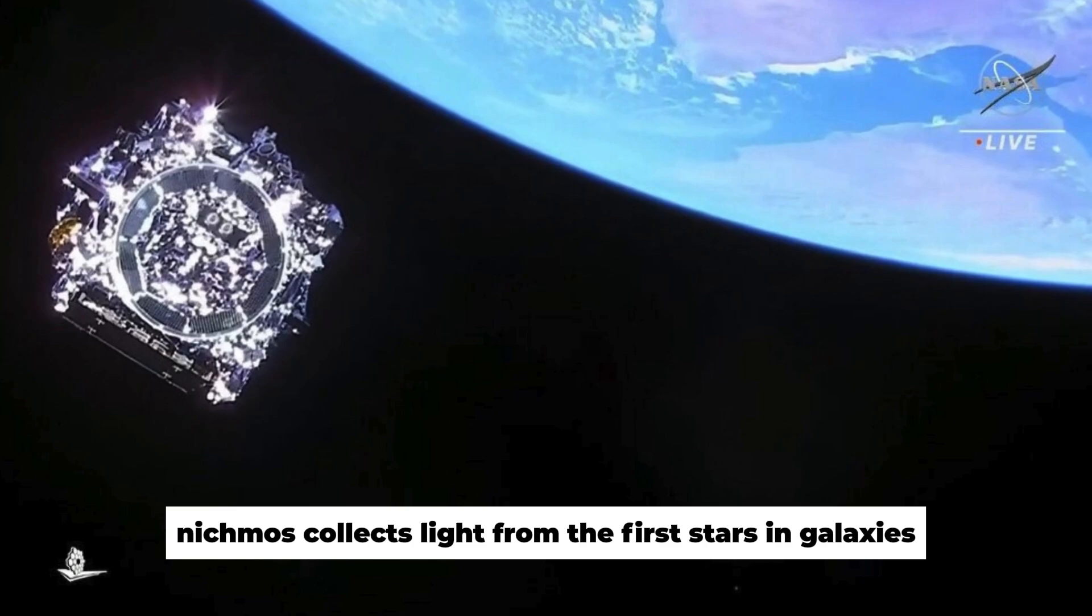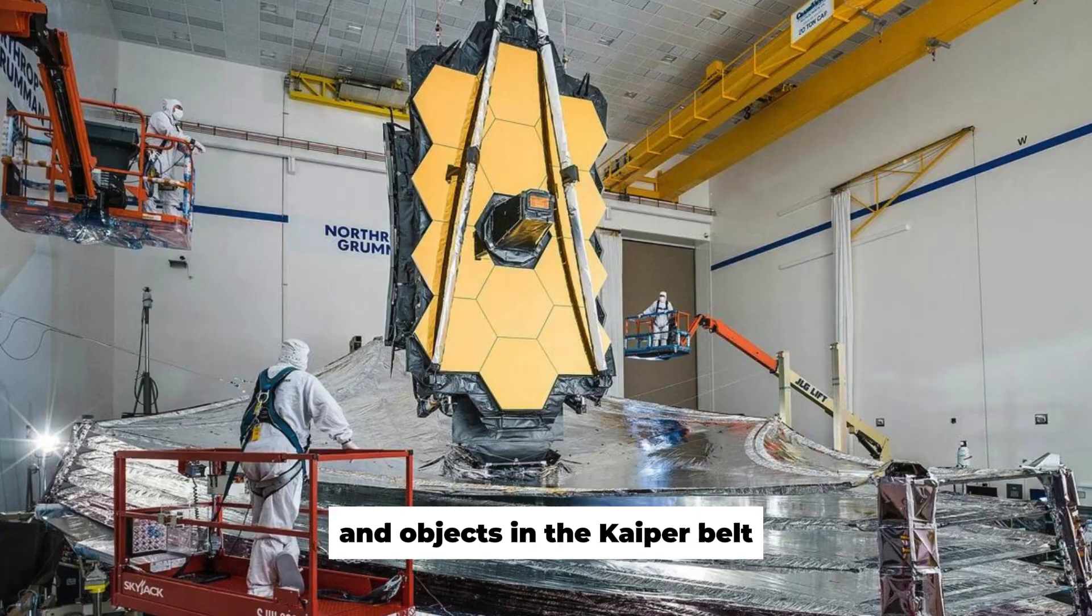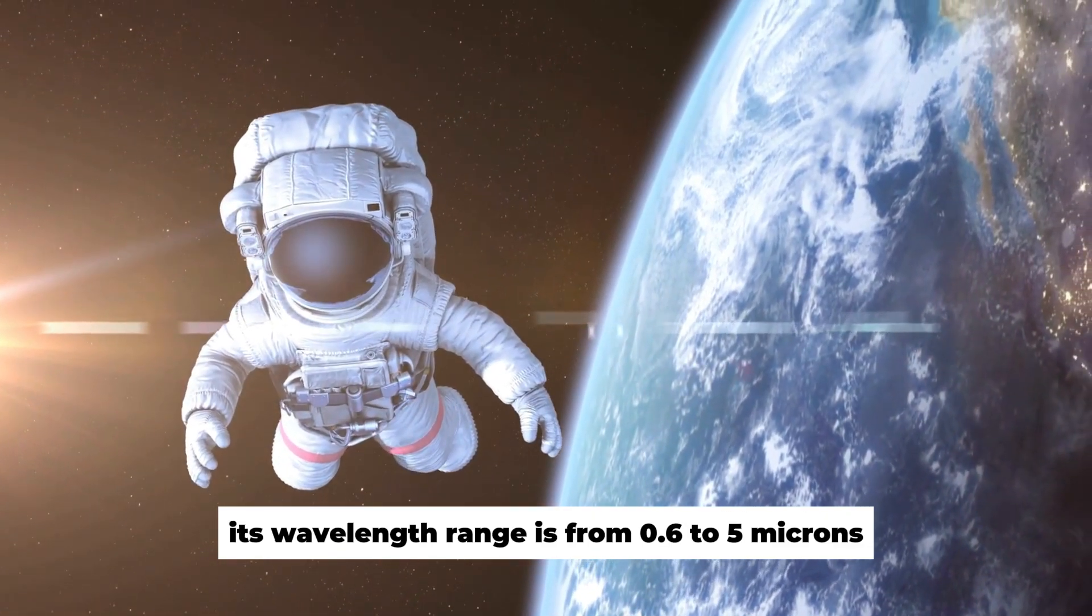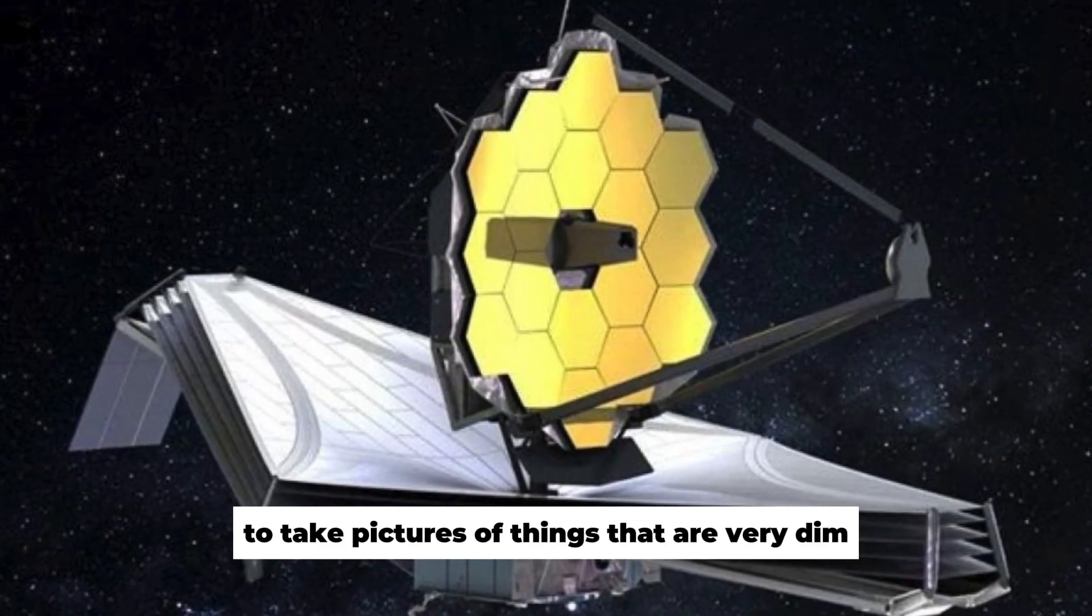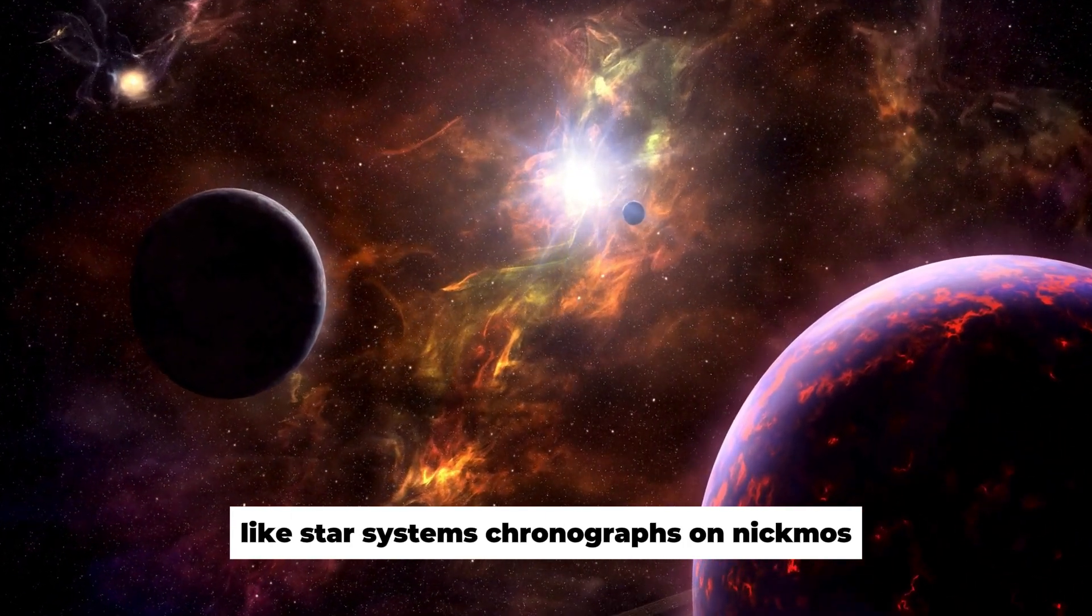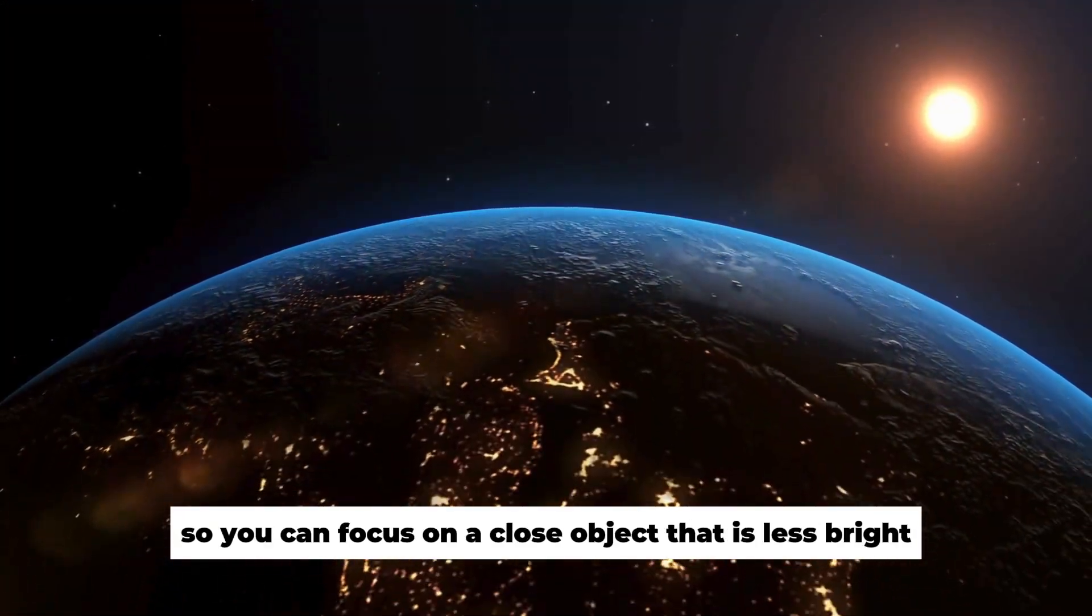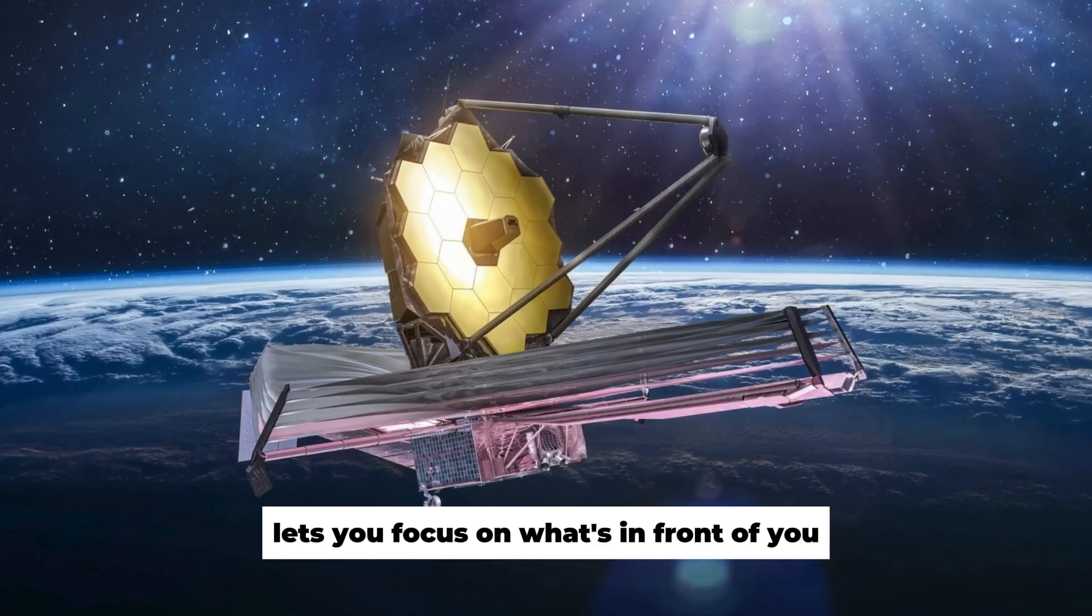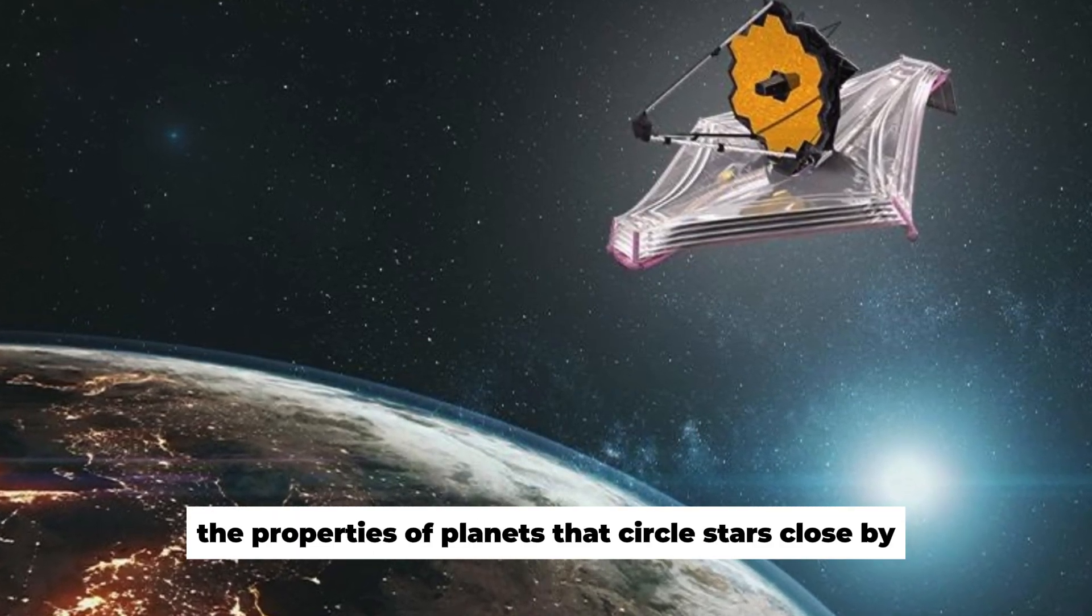NIRCAM collects light from the first stars and galaxies, as well as stars in nearby galaxies, young stars in the Milky Way, and objects in the Kuiper Belt. Its wavelength range is from 0.6 to 5 microns. Astronomers can use NIRCAM coronagraphs to take pictures of things that are very dim and close to a central light source, like star systems. Coronagraphs on NIRCAM work by blocking the light of a brighter object, so you can focus on a close object that is less bright. This is similar to how raising your hand over your eyes in the sun lets you focus on what's in front of you. Astronomers plan to use coronagraphs to find out about the properties of planets that circle stars close by.